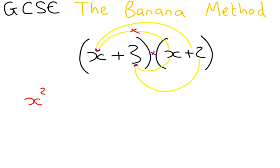The next line we are going to multiply is x times 2. x times 2 is 2x and there's a plus and a plus, so it's plus 2x.